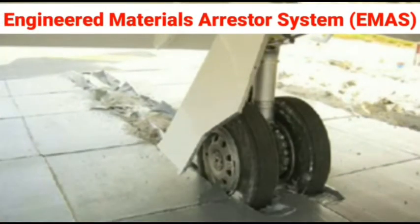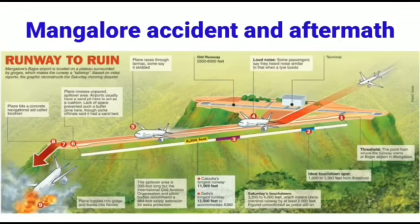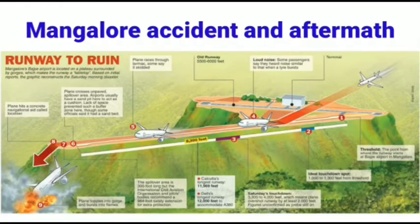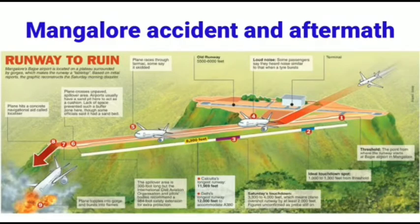To prevent such tragedies, one important measure is installing an Engineered Materials Arresting System (EMAS), which helps arrest the speed of the plane and brings it to a stop. We can also learn from previous accidents — in 2010 in Mangalore, a similar accident occurred when an Air India flight tried to land on the tabletop runway, skidded off, fell down, caught fire, and caused many casualties.